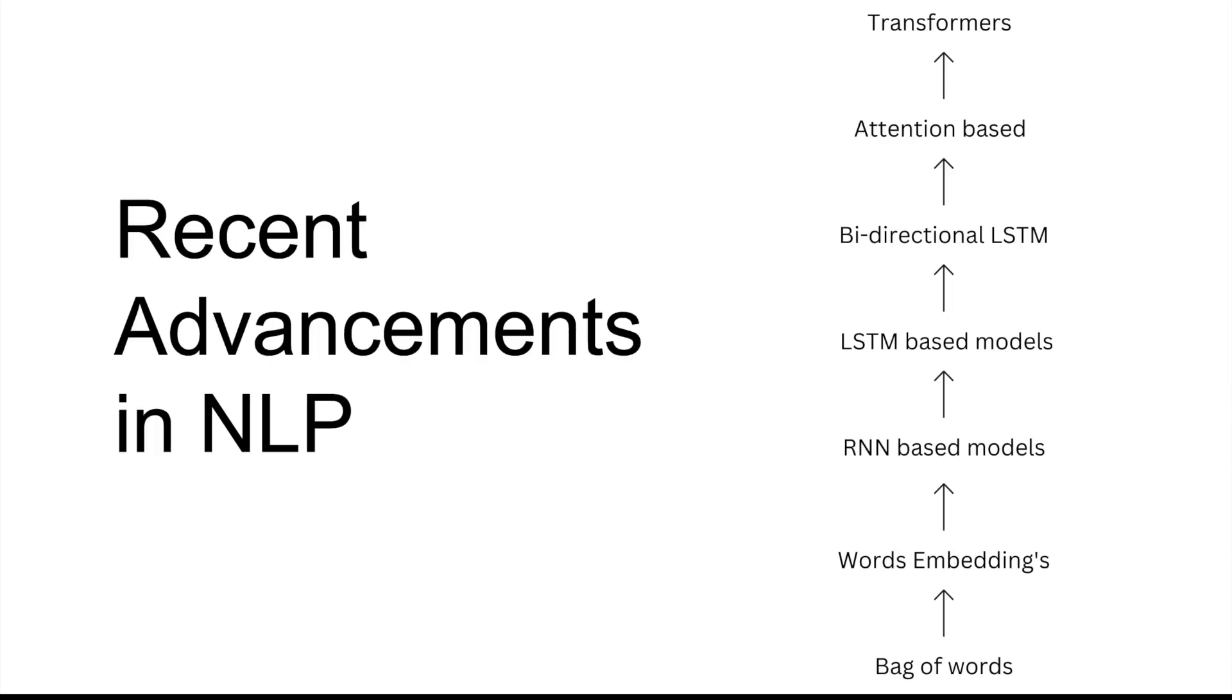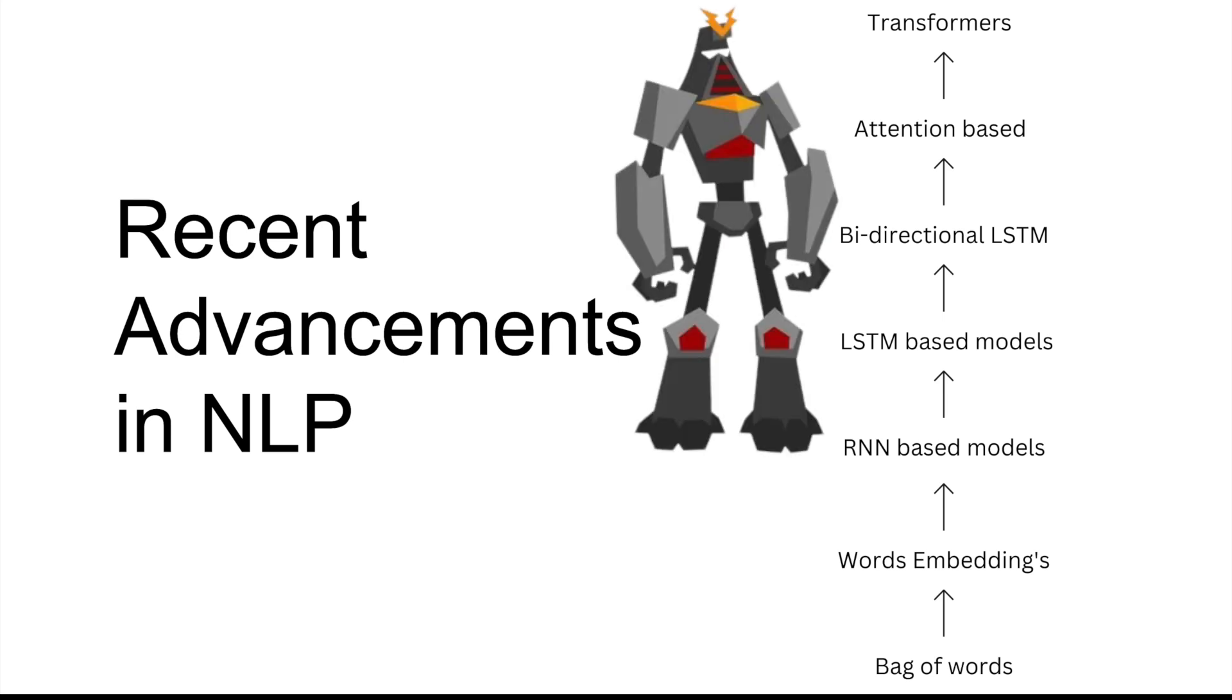The initial models were based out of simpler approaches like bag of words, then came word embeddings, then we have RNNs, LSTM based models, bi-directional LSTMs, then attention based networks and finally the king that is ruling all the large language models today, which is transformers.